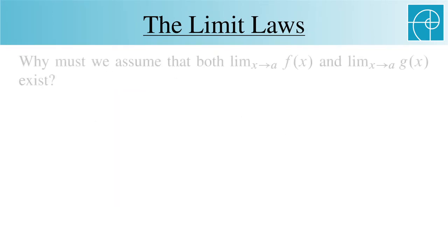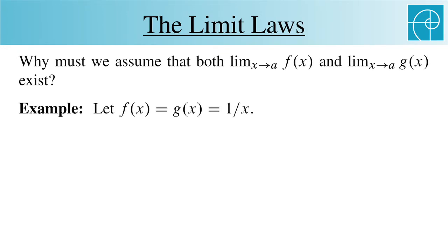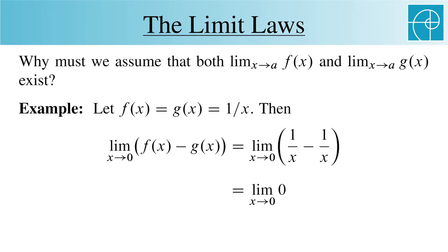You might be wondering why we need to assume that the limits of f and g exist. Let's look at an example that shows us why. If f and g are both 1 over x, then the limit of f minus g at 0 is the limit of 1 over x minus 1 over x, which is always 0 as long as x isn't 0.